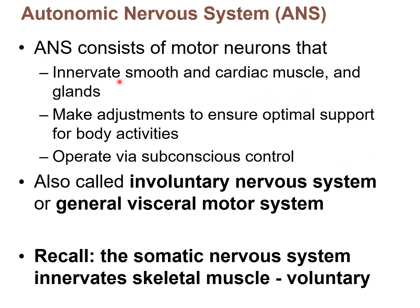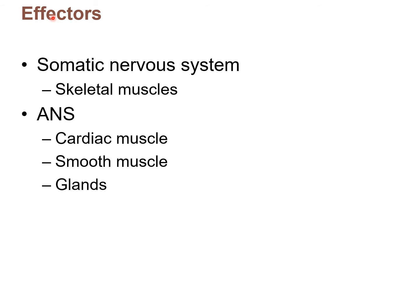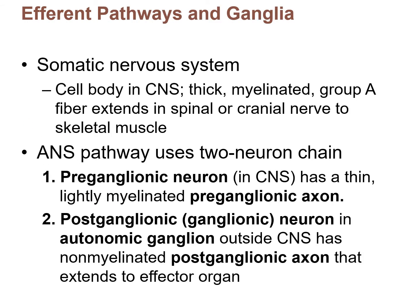So here's the recap: the ANS — the autonomic nervous system — innervates smooth muscle, cardiac muscle, and glands as its effectors. It's subconscious, so we don't consciously control these motor processes. Just recall that in the somatic nervous system the effectors are skeletal muscle and they're voluntary. The autonomic nervous system, by contrast, is involuntary because these processes happen automatically — think 'autonomic, automatic.' For the somatic nervous system: skeletal muscles. For the autonomic nervous system: cardiac and smooth muscle, and glands.